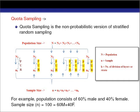Let's come to the example. Suppose a population is divided according to the sex of the population, and we know that there is 60% male and 40% female. Suppose we want to collect a sample of size n = 100. Since we are dividing the population based on sex, there will be only two strata: male and female.